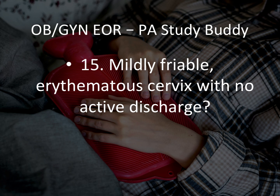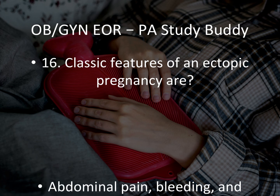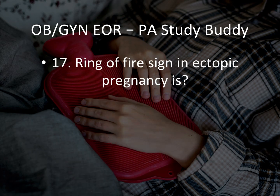Question 15: Mildly friable, erythematous cervix with discharge — that should make you think of cervicitis. Question 16: Classic features of an ectopic pregnancy. The patient will come in with abdominal pain, bleeding, and an adnexal mass while pregnant. Adnexal mass, pain, and bleeding in a pregnant woman should make you think of ectopic pregnancy.